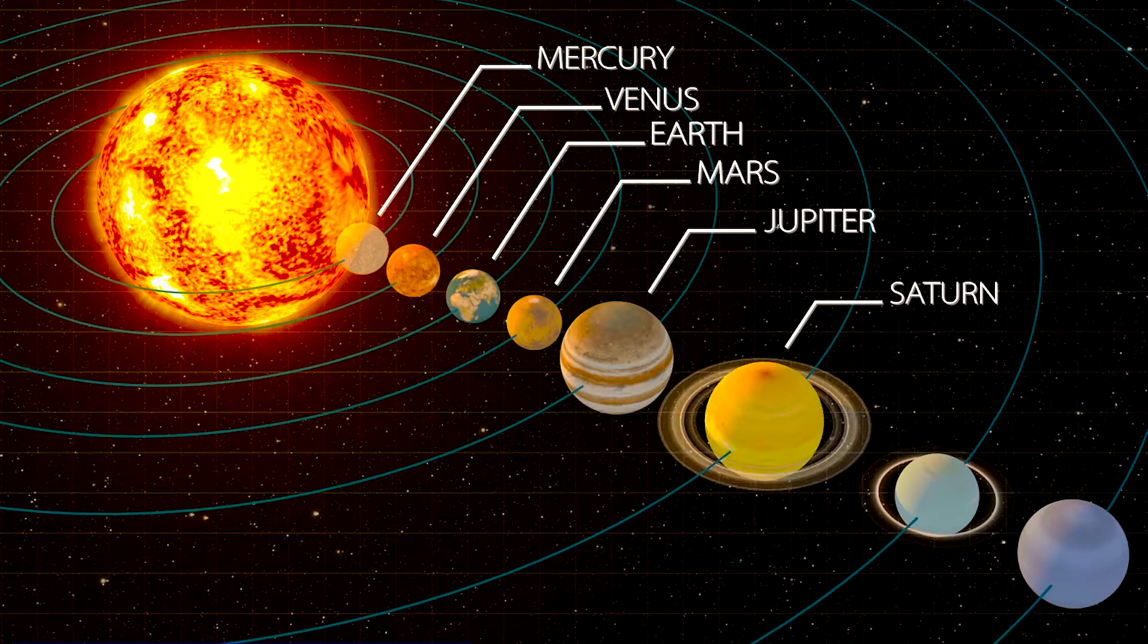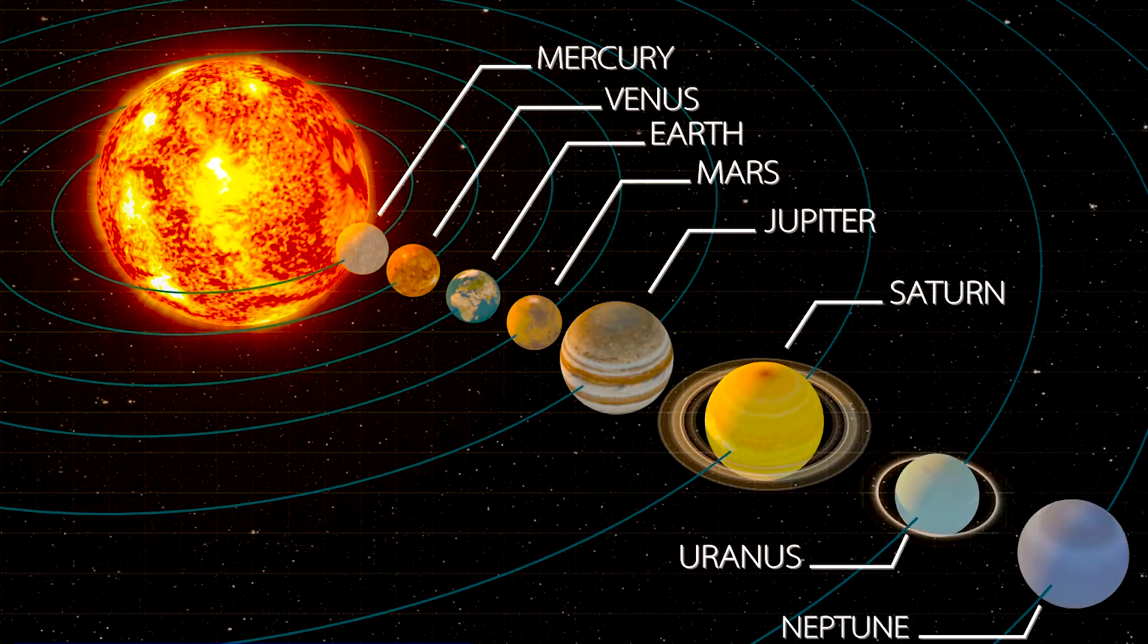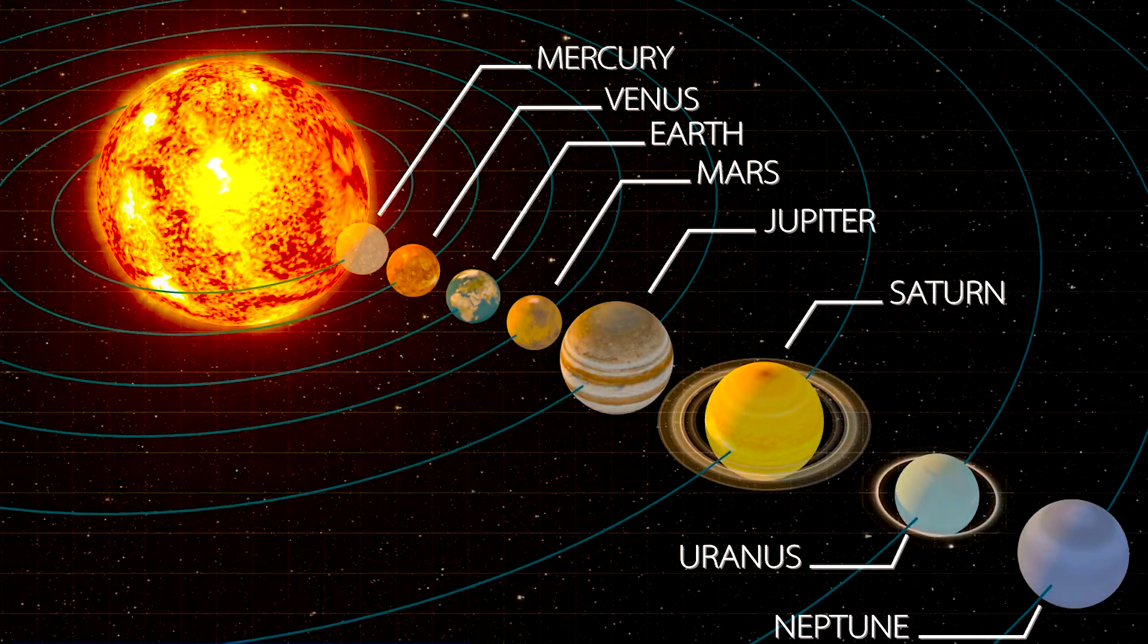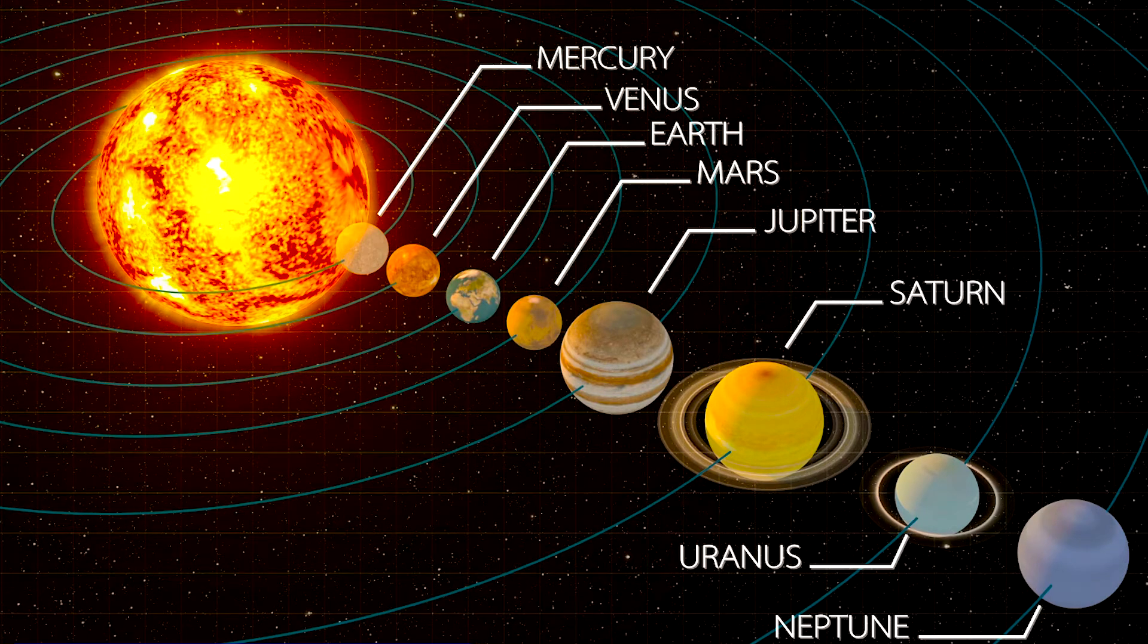The next planets are called Jupiter, Saturn, Uranus, and Neptune. They are very big, and they are made of gas.